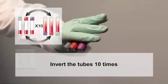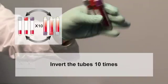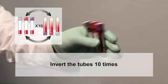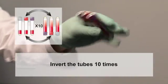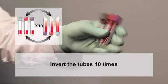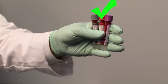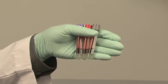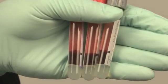This is achieved by inverting the tubes 10 times, as demonstrated here. Proper mixing will ensure that the entire inner surface of the tubes is coated with blood.